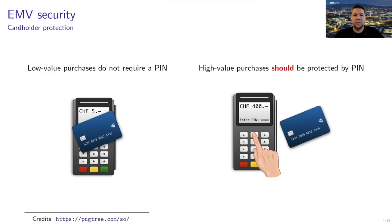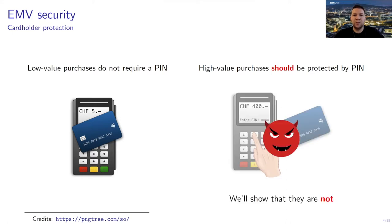What's EMV security? The primary goal of EMV security is to protect card holders. Namely, high value purchases should be protected by a PIN. In this work, as well as in our previous work, we show that this is not the case — criminals can bypass this PIN verification process and therefore violate the fundamental security goal of the standard.